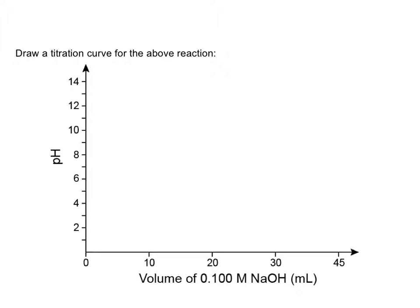Now let's draw the curve for this reaction. At 0 mL, pH was 1. At 20 mL (equivalence point), pH = 7. At 40 mL, pH = 12.52. Because this is a strong acid and a strong base, the pH change happens very rapidly — the curve starts at 1, rises steeply through the equivalence point, then levels off quickly. This is what the titration curve for a strong acid versus a strong base looks like.